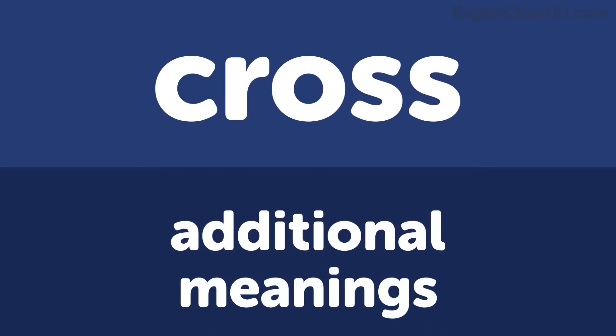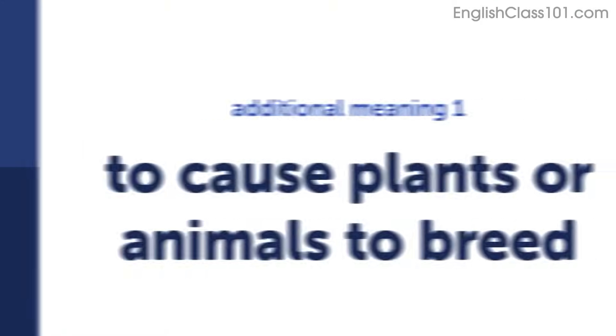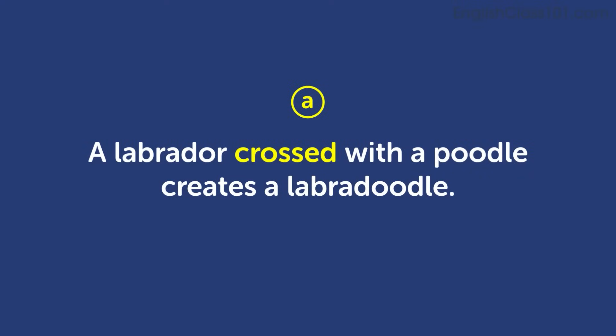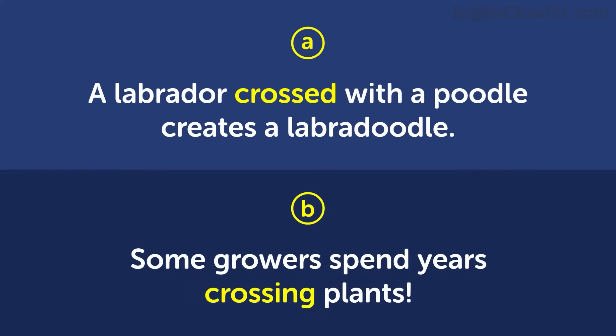Now let's talk about some additional meanings for this verb. The first additional meaning is to cause plants or animals to breed. These are animals or plants of the same species but perhaps not typically bred together. Some examples: A labrador crossed with a poodle creates a labradoodle. Some growers spend years crossing plants.